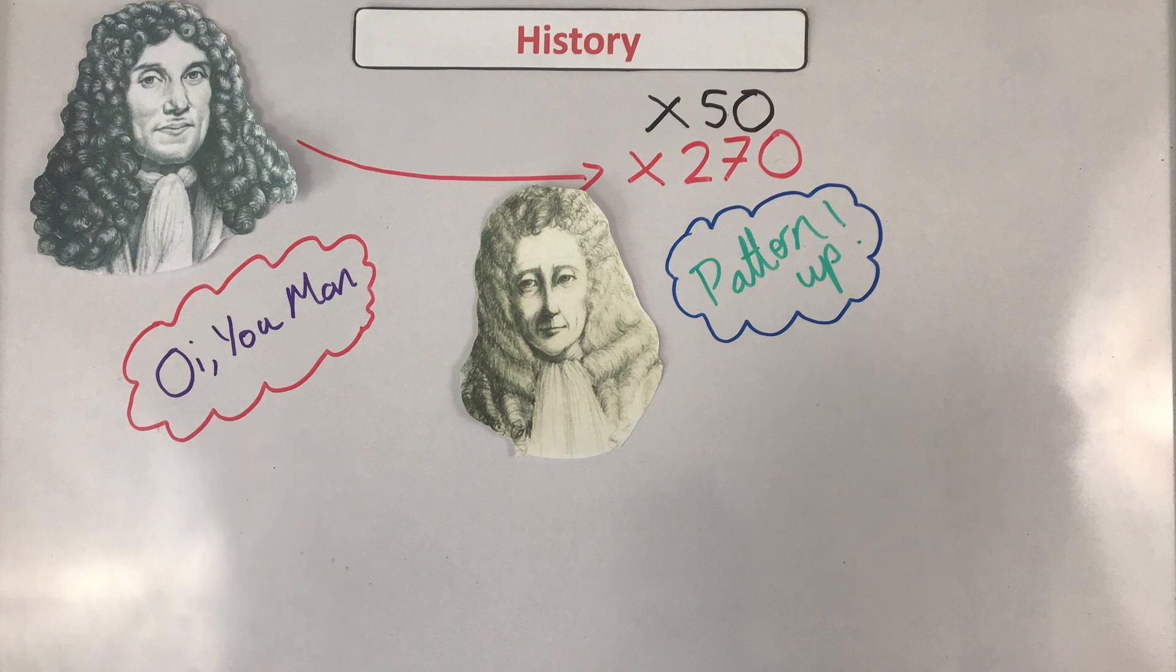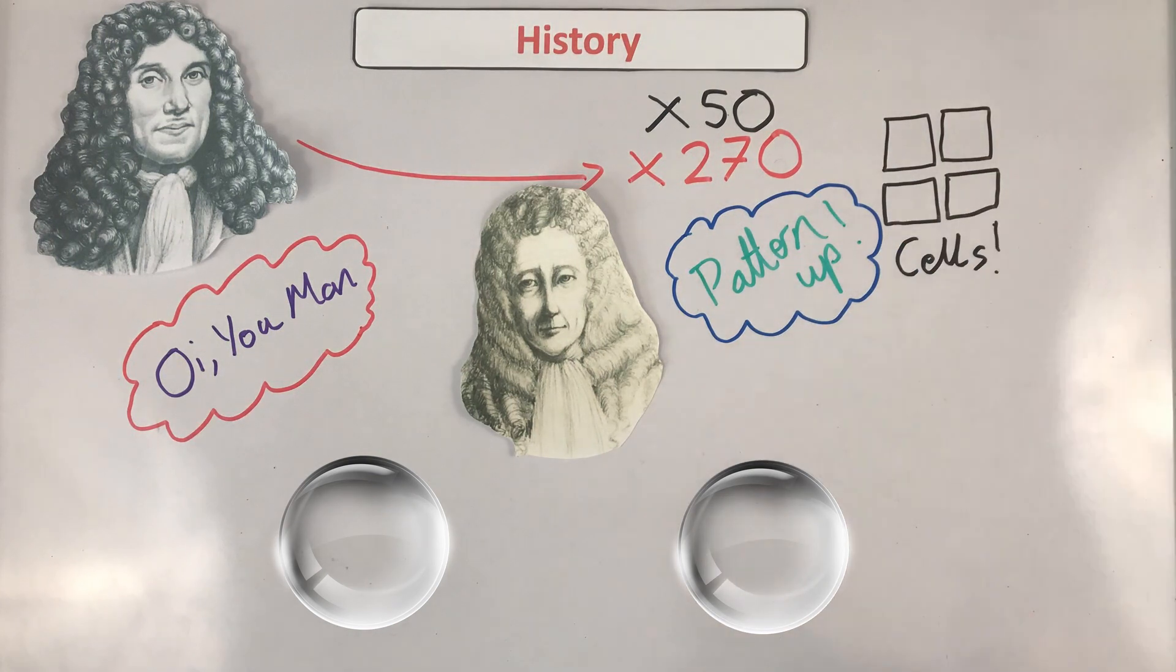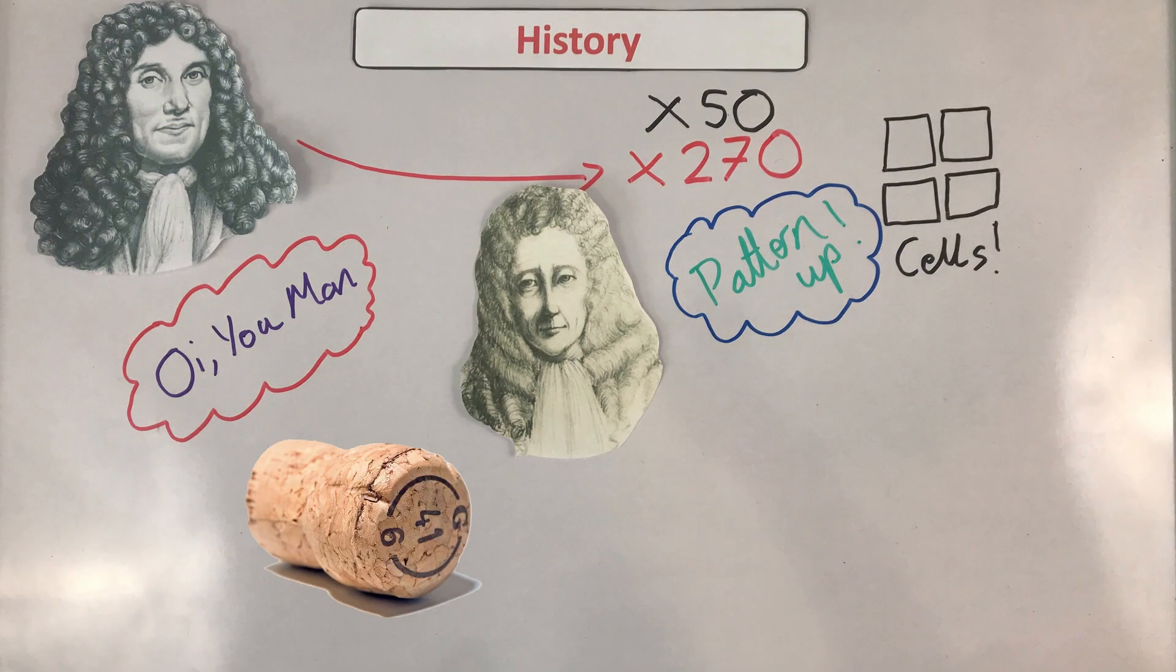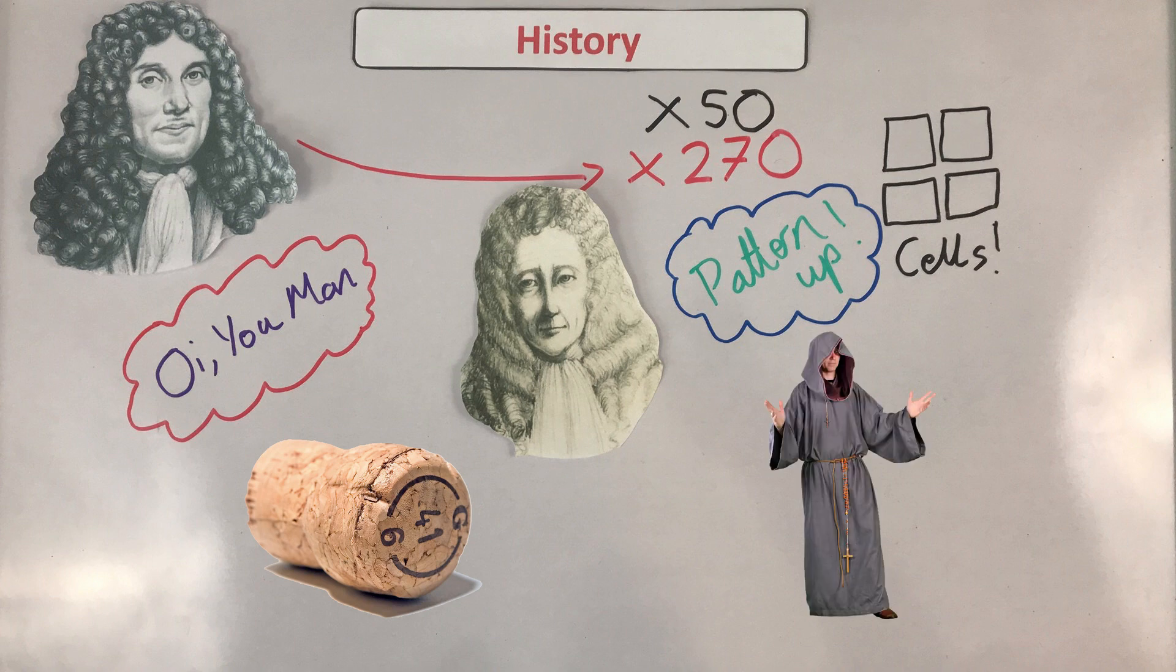Robert Hooke had previously invented a microscope that had two lenses. He was also the one that coined the term cell because the plant samples that he was researching resembled the cells in the monastery.